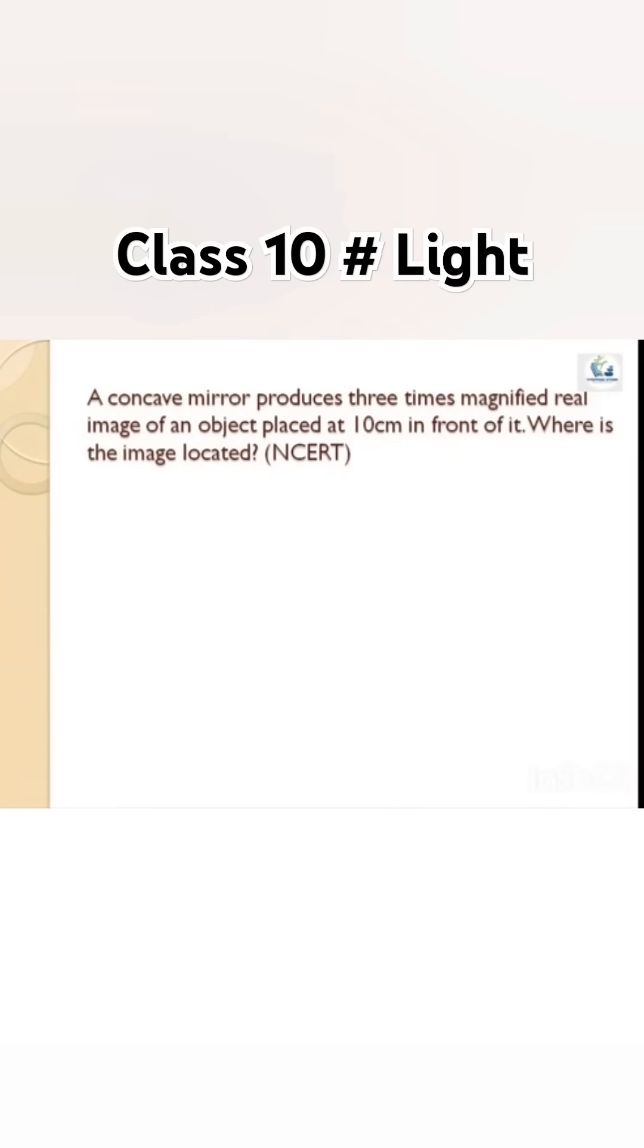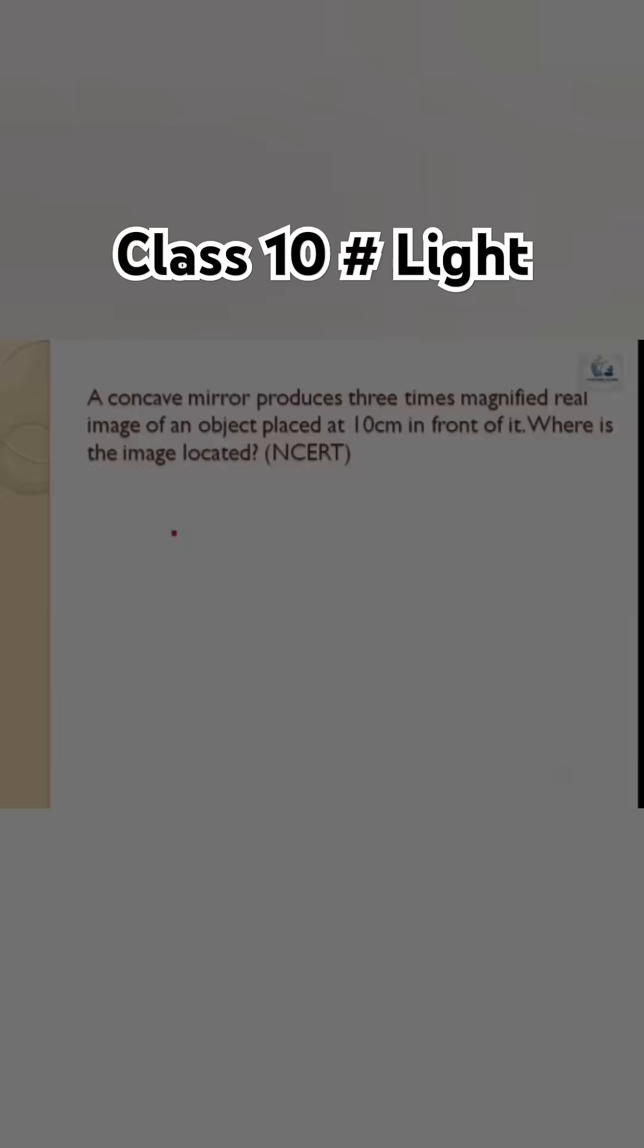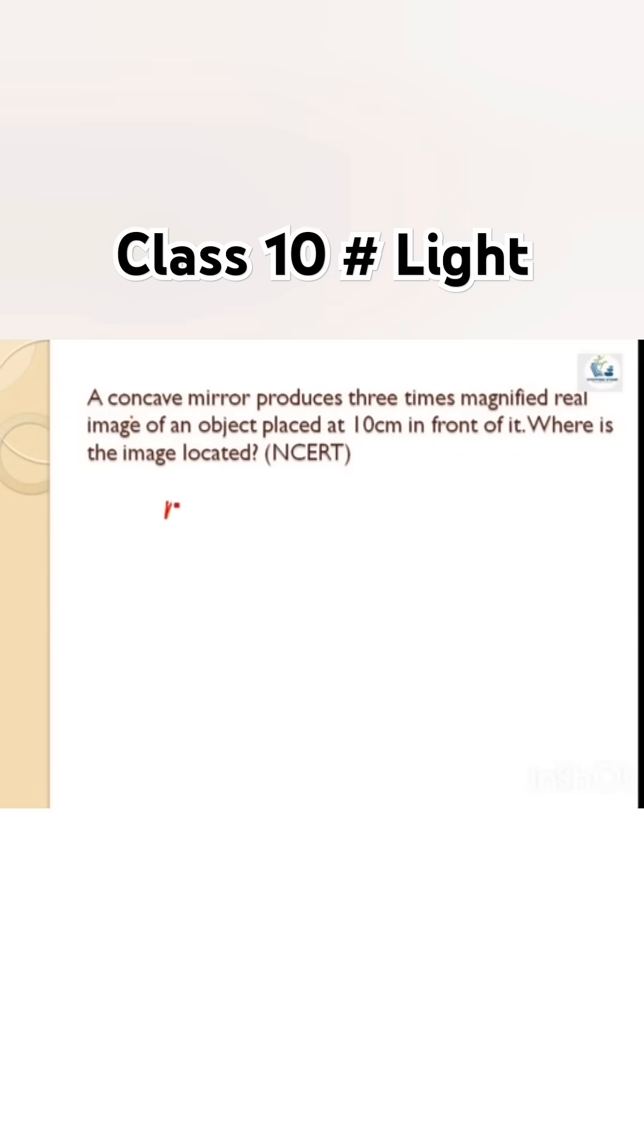A concave mirror produces a three times magnified real image of an object placed at 10 centimeters in front of it. Where is the image located? The magnification m equals 3, since the image is three times magnified.